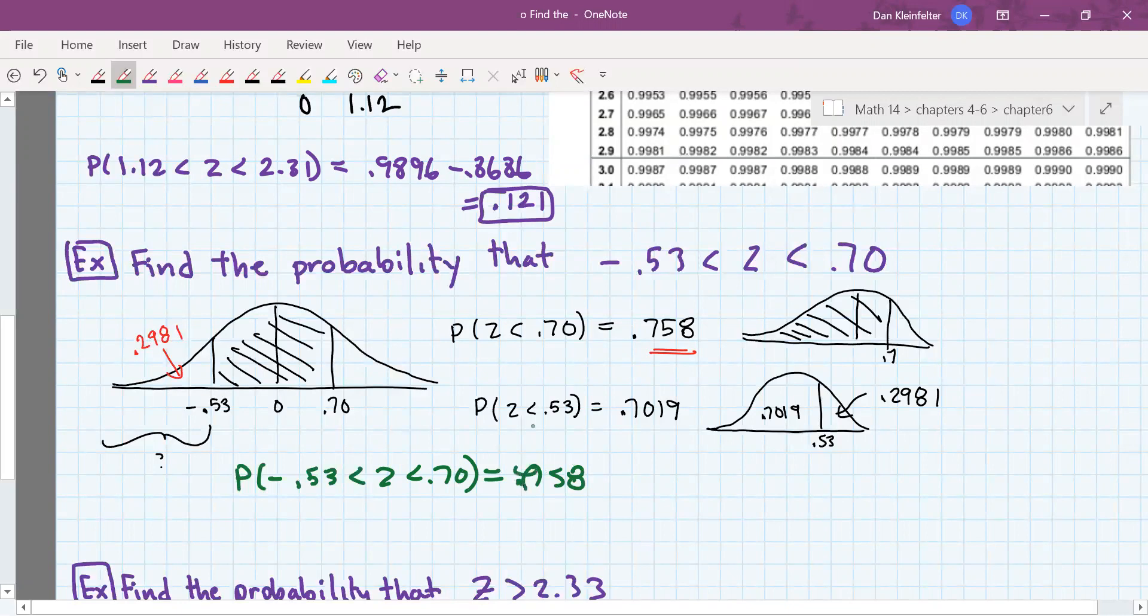So positive 0.758 minus the 0.2981, which is 0.4599.